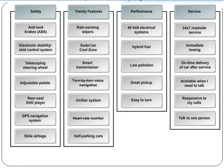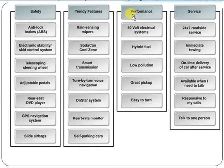A simple affinity diagram looks like this: for example, groups like Safety, Features, Performance, and Services. If you want to purchase some equipment, each group has its own points. Based on grouping, prioritization, and ranking, you should be able to analyze and take decisions accordingly. Thank you so much for your time — that's all for my side.